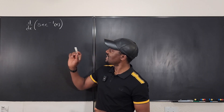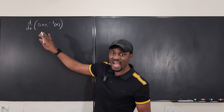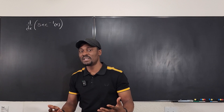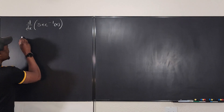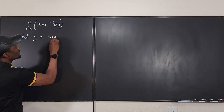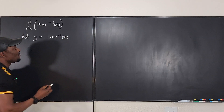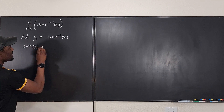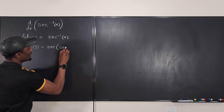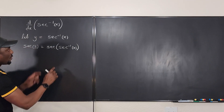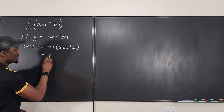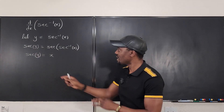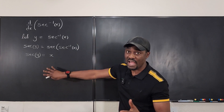The first thing to do is rewrite the expression as if it were equal to y, because we don't really know what to do with arc secant or inverse secant directly — what we know how to work with is secant. So we say: let y be equal to inverse secant of x. Then taking the secant of both sides, secant of y equals the secant of inverse secant of x, which simplifies to secant y = x.